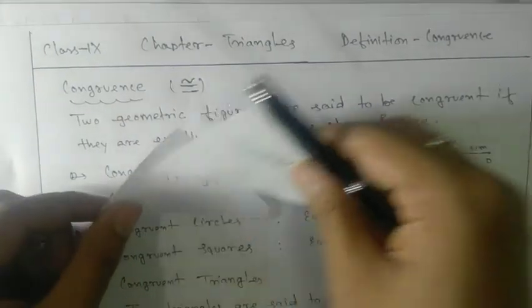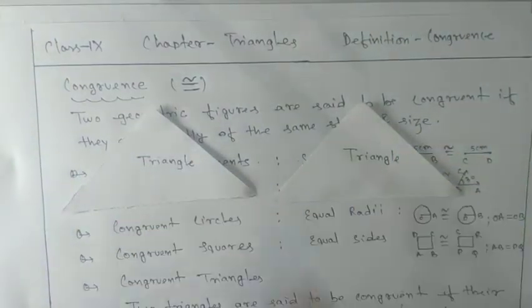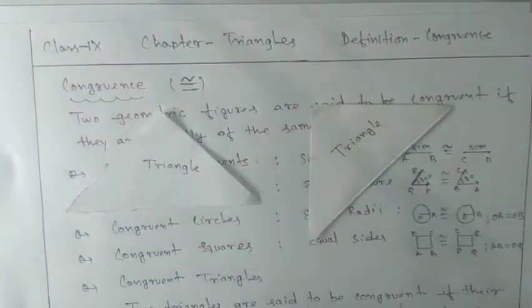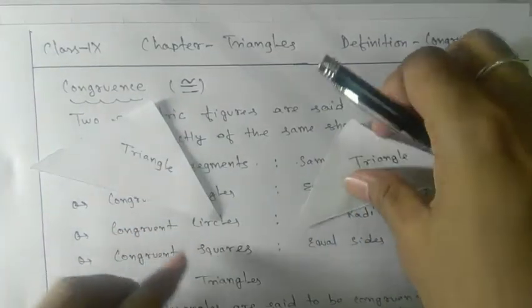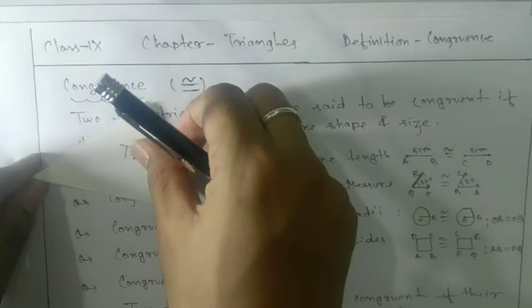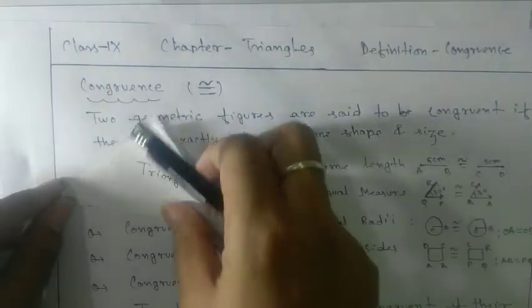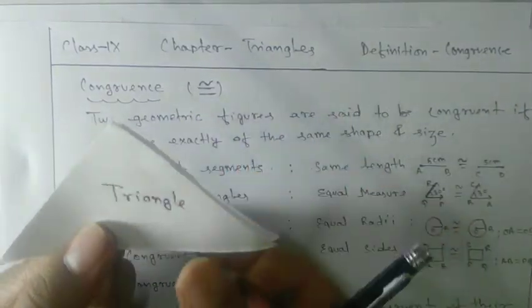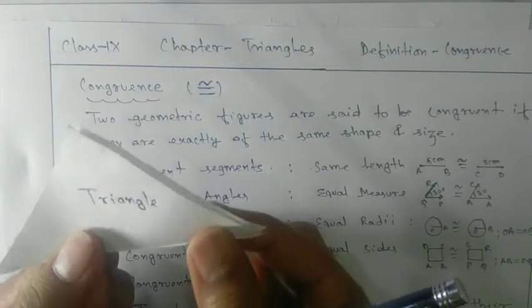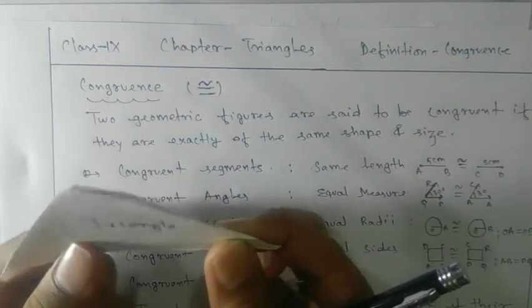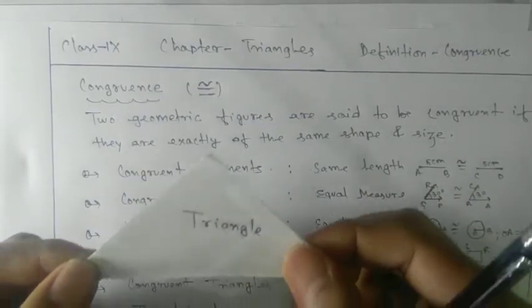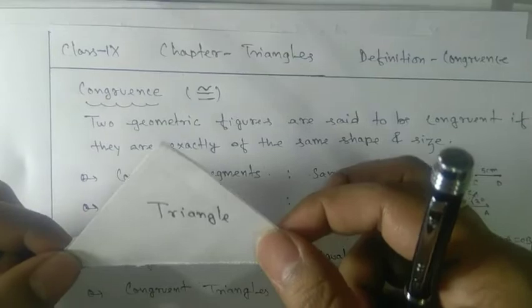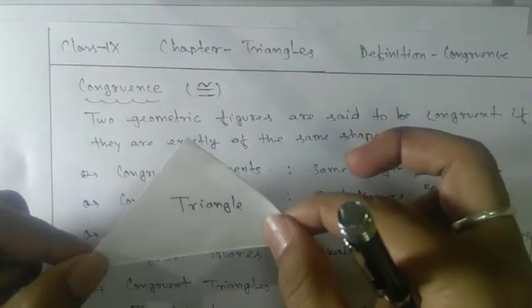Here you can see two triangles — take them and place one on another, and you can see that they coincide. They are coincide — look at here. So this type of triangle is called congruent triangles. Our chapter is totally based on congruent triangles.